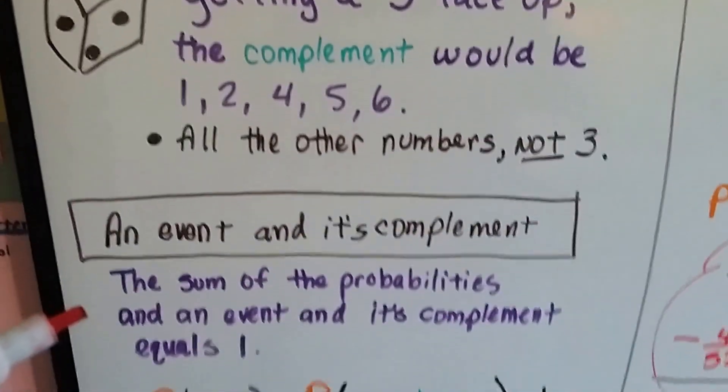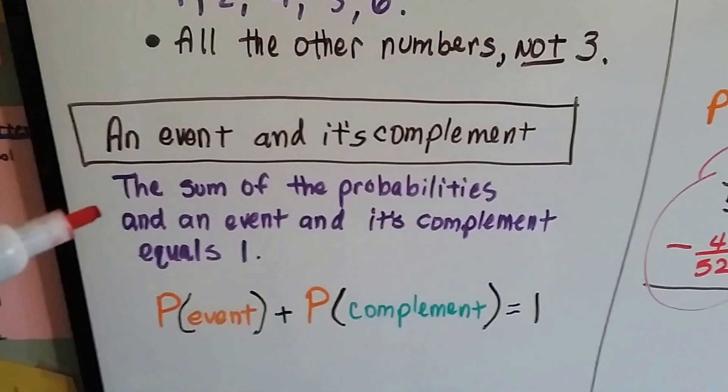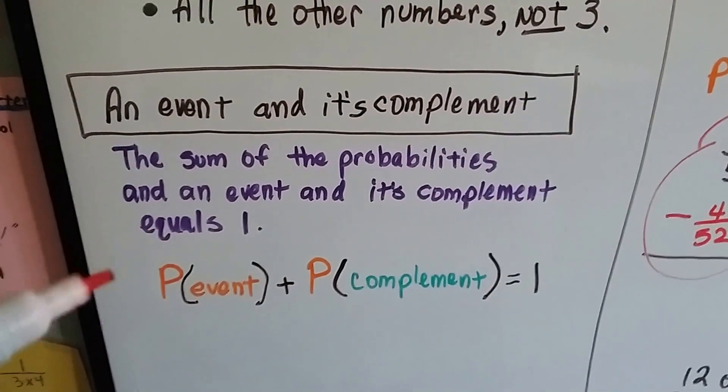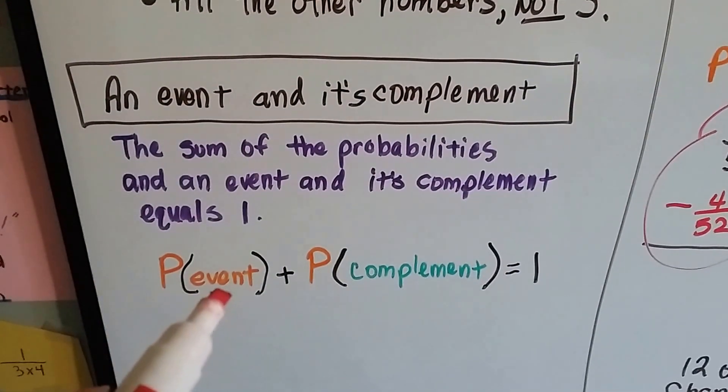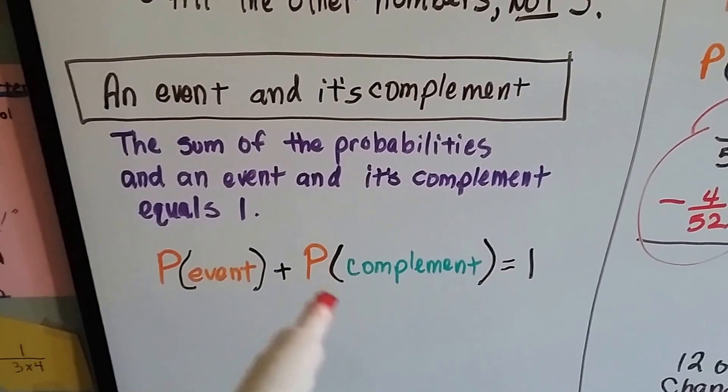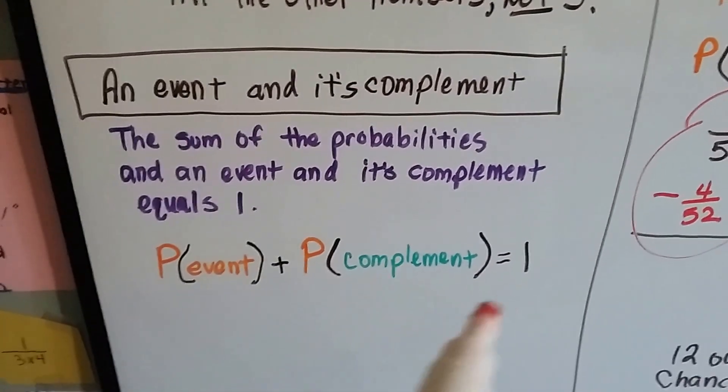The sum of the probabilities of an event and its complement equals 1. The probability of an event happening plus the probability of the complement—of it not happening—is 1.